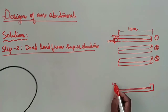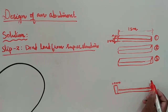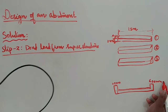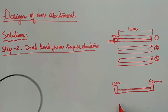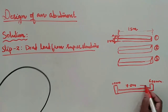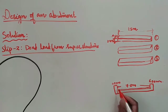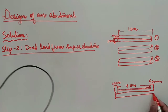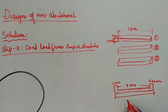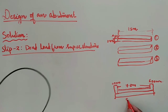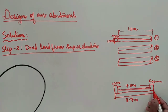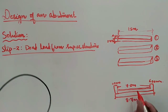From the figure, there is a footpath of 600 mm on either side. The loading is IRC Class AA. The carriageway width is 7.5 meters. The total width of the deck slab is 0.6 + 7.5 + 0.6 = 8.7 meters.